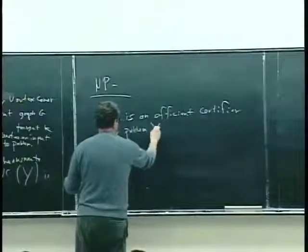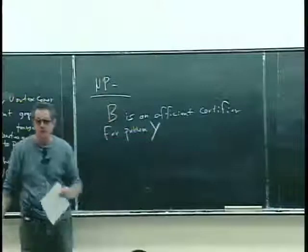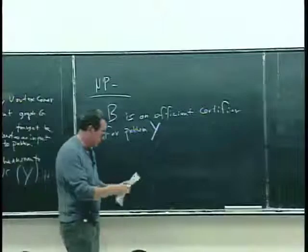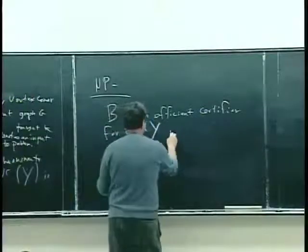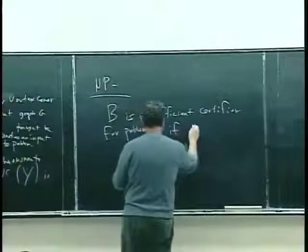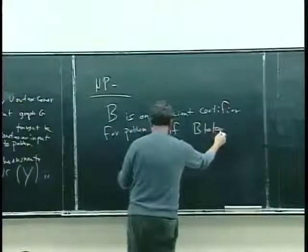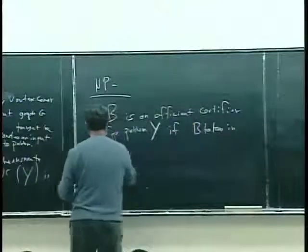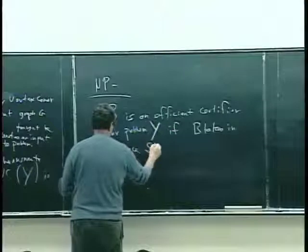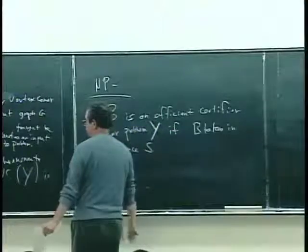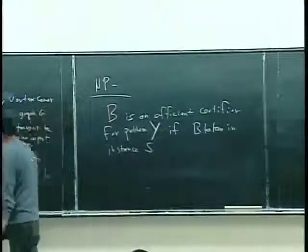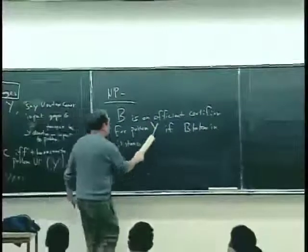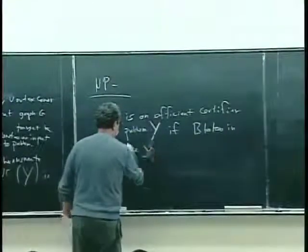So Y is a problem — you can think of it as vertex cover or whatever problem you like. It's a decision problem with a yes or no answer. If B takes in an instance — we'll call little y as an instance — so B takes in an instance of that problem or language.